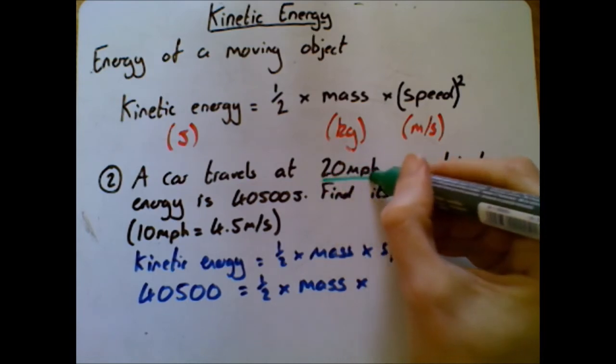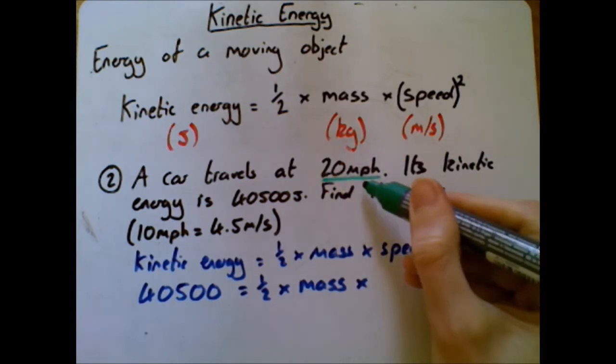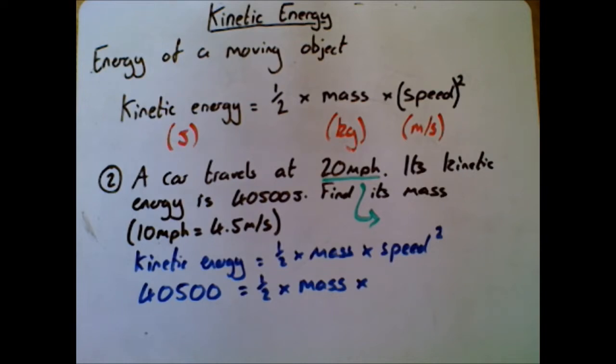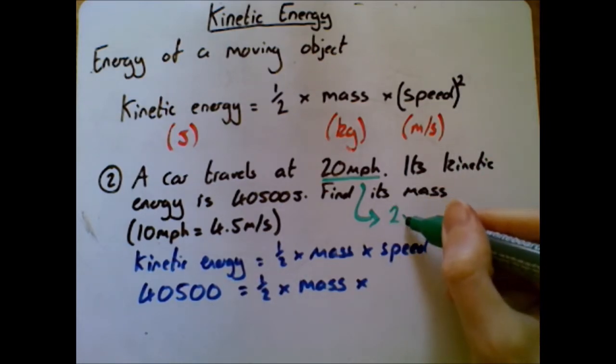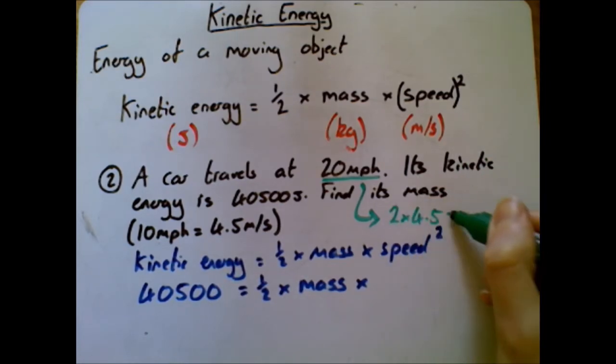Right, speed. Now there's a little extra trap in here - this 20 miles per hour is written in miles per hour. You're not expected to be able to convert miles per hour to meters per second without any help, but it gives you information here that 10 miles per hour is 4.5 meters per second, which means that 20 miles per hour must be 2 times 4.5, which is of course 9 meters per second.